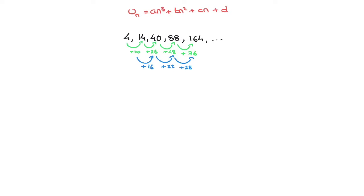The second differences are still changing, so we go one step further and look at the third differences — the differences between the second differences. From 16 to 22 we have plus 6, and from 22 to 28 we have plus 6 again. The third differences are always the same, always equal to 6. When this happens it means we're dealing with a cubic sequence. The fact that the third difference is constant is what implies that we're dealing with a cubic sequence.